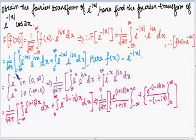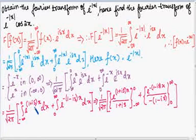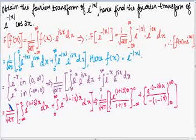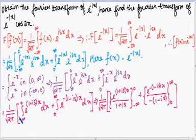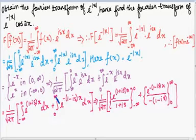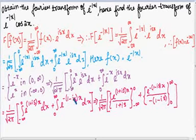We can combine the exponential terms. The Fourier transform of f(x) becomes 1 divided by square root of 2π: integration from minus infinity to 0 of e^((1+is)x) dx, plus integration from 0 to infinity of e^(-(1-is)x) dx.